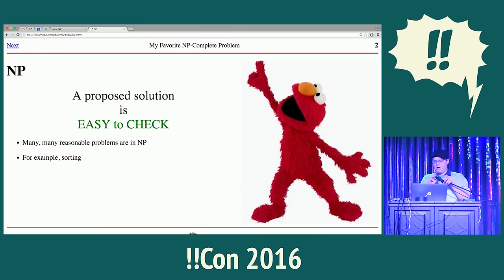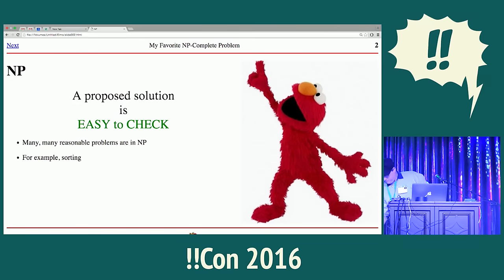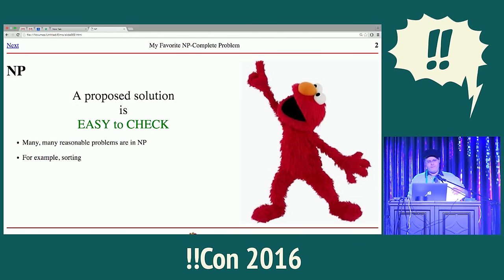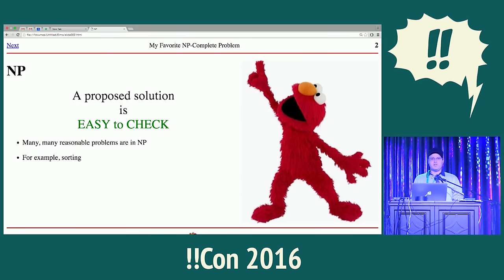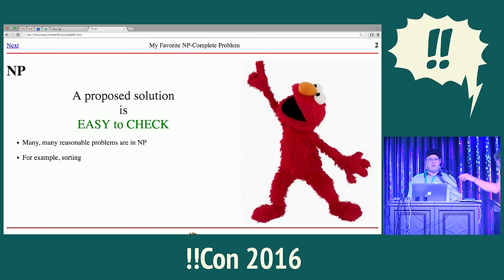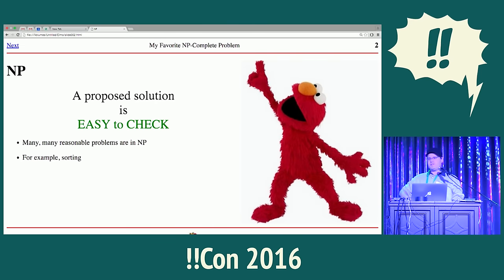So there's this class of problems called NP, and what it means is that if somebody hands you a solution to the problem — or something they claim is a solution — you can fairly easily and efficiently decide whether they're telling you the truth or not.